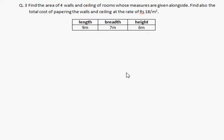We need to find the area of 4 walls and the ceiling of the room, and the total cost of papering the walls and ceiling at the rate of Rs 18 per meter square.